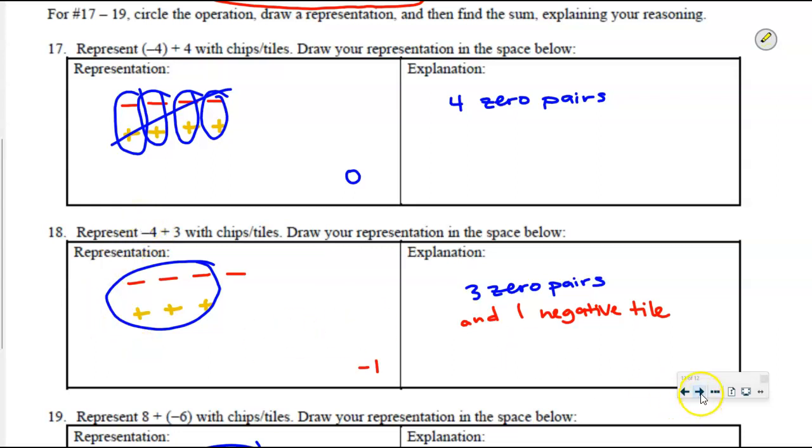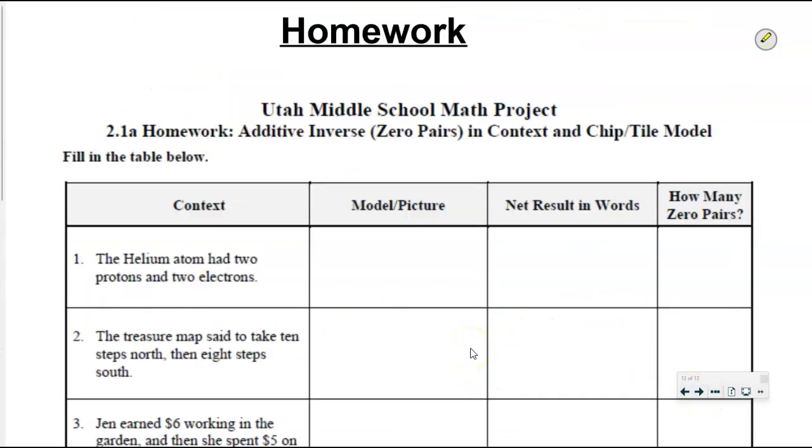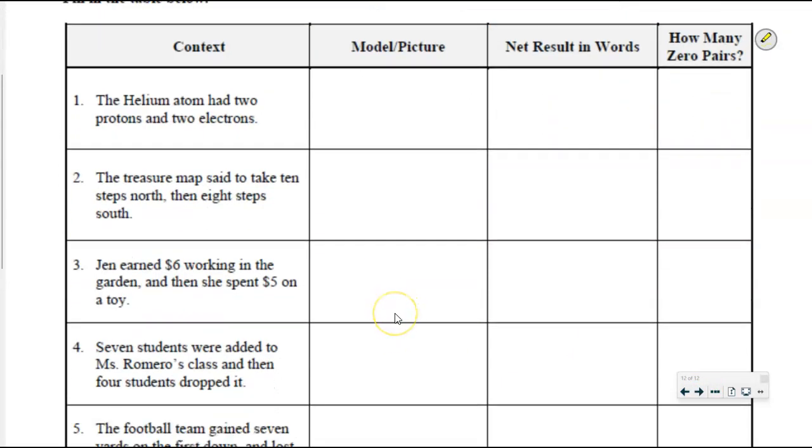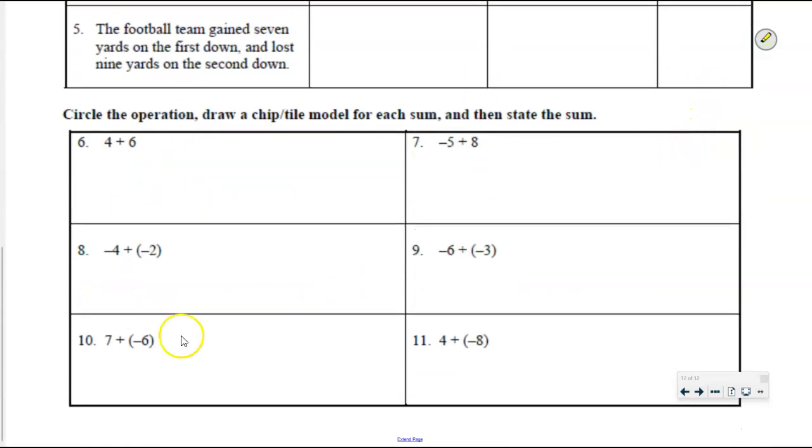This is it for today's lesson. So here is your homework assignment 2.1a, the whole homework section. You have some more problems where it's continuing to draw those models, finding the net result, and then asking how many zero pairs. And then six problems where I want you to create your own chip tile or rock balloon model. That's it for today. Thanks for watching. We'll see you next time.